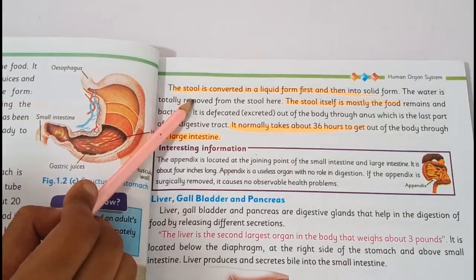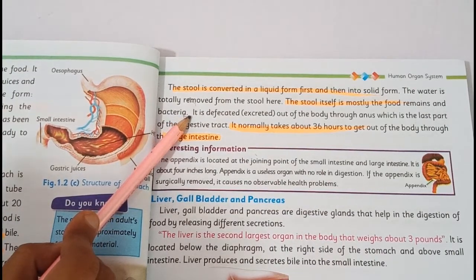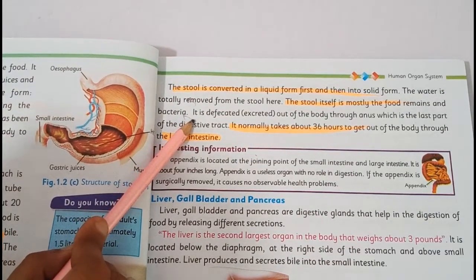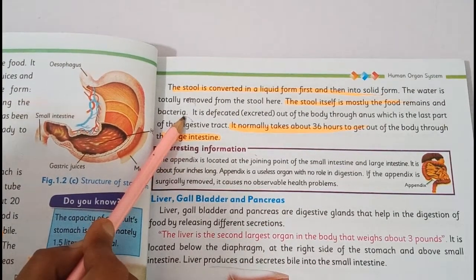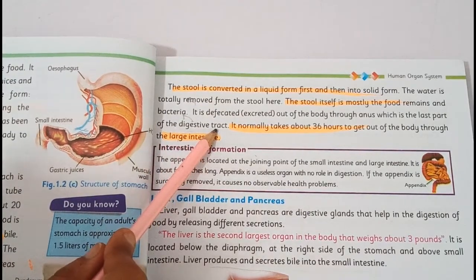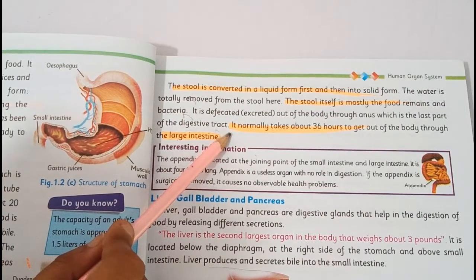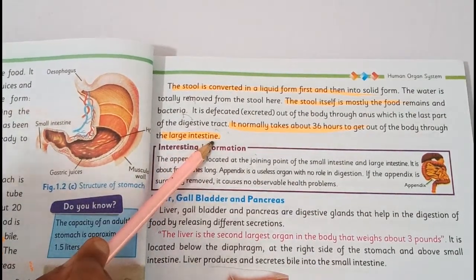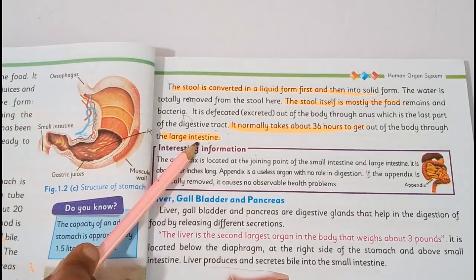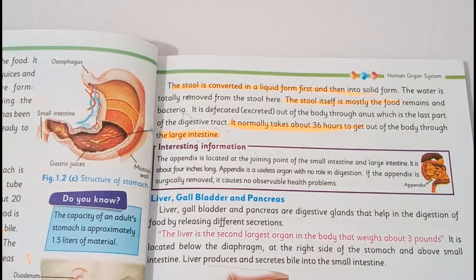First, the stool is in liquid form and then converts to solid form. The water is totally removed from the stool here. The stool is mostly food remains and bacteria. It is excreted out of the body through anus, which is the last part of the digestive tract. It normally takes about 36 hours to get out of the body through the large intestine.